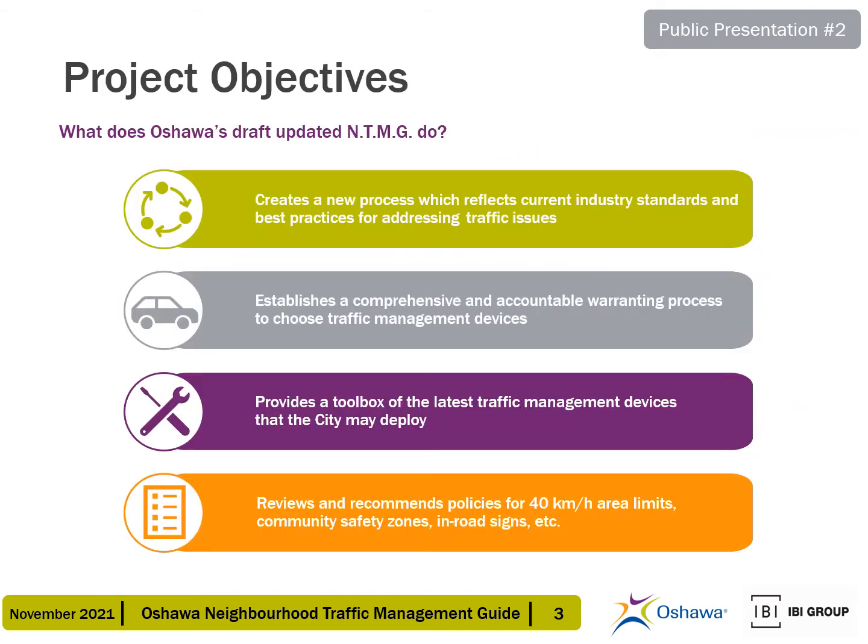The objectives of the Oshawa Neighborhood Traffic Management Guide update include creating a new process for addressing traffic issues which reflects current industry standards and best practices, establishing a comprehensive and accountable warranting process to choose traffic management devices, providing a toolbox of the latest traffic management devices that the city can deploy on its roads, and reviewing and recommending policies for 40 km/h speed limit areas, community safety zones, in-road signs, and other tools.